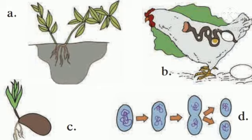The process of formation of new organisms of the same species by earlier existing organisms is called reproduction. Reproduction is one of the various important characters of living organisms. It is also one of the various reasons responsible for evolution of each species.